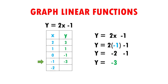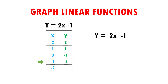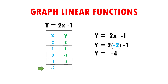Very easy, right? Now we are going to use minus 2. Therefore, it would remain as y equals 2 times minus 2 minus 1. y equals 2 times minus 2 gives me minus 4, and the minus 1 goes down exactly the same. y equals minus 4 minus 1 gives me minus 5 as a result. Therefore, x is equal to minus 2 and y equals minus 5, and I put it in my table.